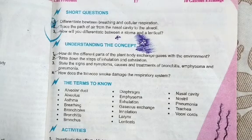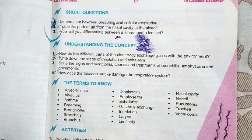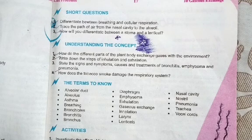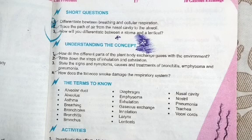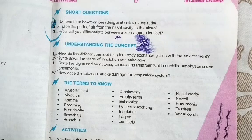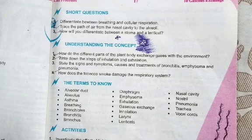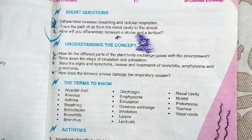The next question: write down the steps of inhalation and exhalation. During inhalation, the ribs contract, the diaphragm flattens from its dome shape, pressure in the lungs reduces, and the chest cavity and surface area increase. During exhalation, the rib muscles relax, the diaphragm returns to its dome shape, pressure increases, and the surface area of the lungs reduces, completing the exhalation process.